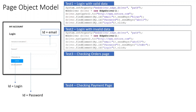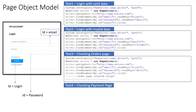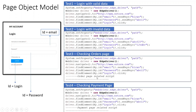The second test has the same elements. The third test also has the same elements. The order-related script is the same. We can also see the payment page. So what do we observe? We can see the general elements are the same — the ID called email, the ID called password — repeated across all tests.